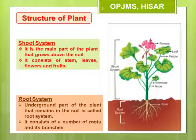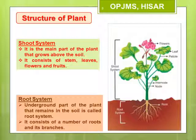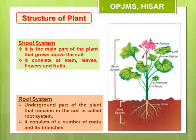A plant has various parts to perform different functions. The two main plant systems are the shoot system and the root system. The green part of the plant that grows above the ground is known as the shoot system; it consists of stem, leaves, buds, flowers, fruits, etc. The underground part of the plant which is non-green and remains in the soil is known as the root system; it consists of roots and their branches.